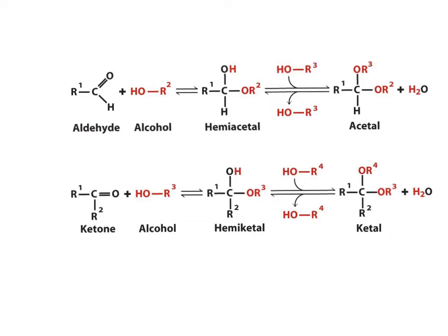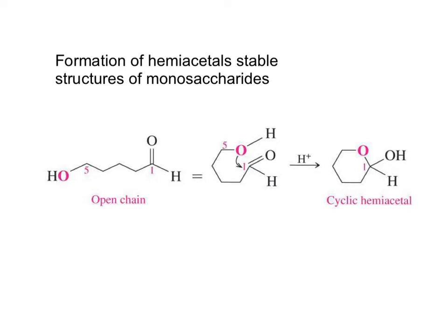A similar reaction can take place with the family of carbohydrates because they contain both the aldehyde group and also an alcohol group to produce a cyclic stable hemiacetal. An aldehyde that at the same time has an alcohol group can react with itself when the conditions are created to produce a cyclic hemiacetal. A hemiacetal is defined as a carbon that contains an OR and an OH.